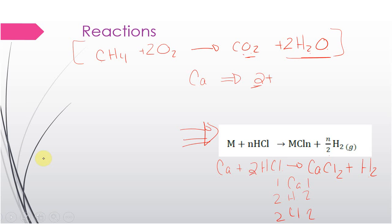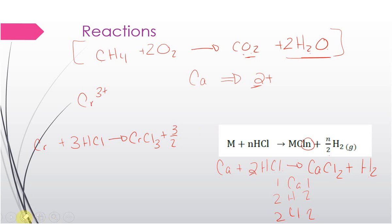Let's go with chromium-3. If we did chromium-3, we rewrite this again: chromium plus 3 HCl produces chromium Cl3, and we change the subscript to the charge which is three, plus 3/2 H2. We can check: one chromium here, one chromium here; three hydrogens on the left, three times two divided by two is three hydrogens on the right; three chlorines and three chlorines. So again this is balanced. We're not asking you to balance these equations — just rewrite the number based on the charge.